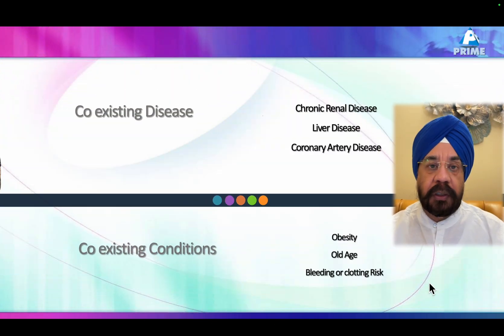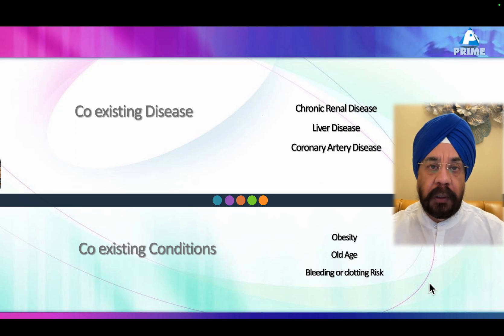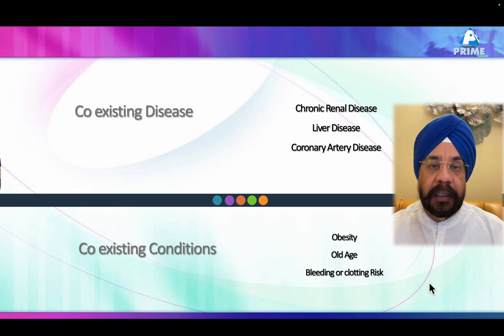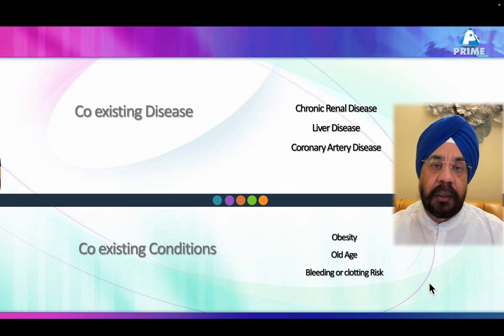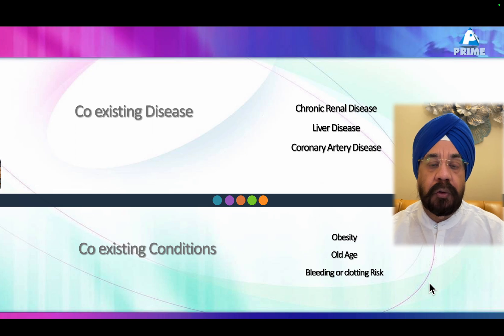The six situations we'll discuss include: the role in chronic kidney disease, role in chronic liver disease, how to use it in coronary artery disease vis-à-vis antiplatelet therapy, and then special conditions — obesity, old age — where we take bleeding or clotting risk into account to decide which of these three NOACs available in India should be used.